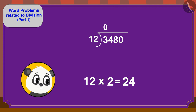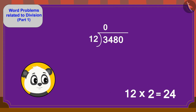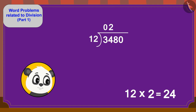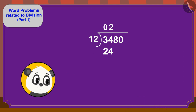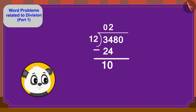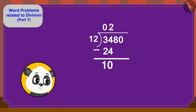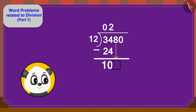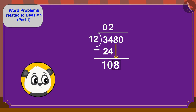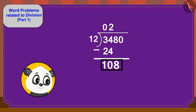12 times 2 is 24. So, here we will write 2 above and 24 below. Subtract to get 10. Now, because we cannot divide 10 by 12, we will bring down the 8 next to 10. Children, can we divide 108 by 12?